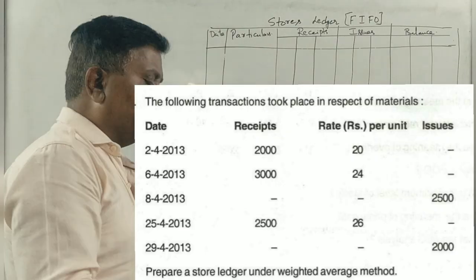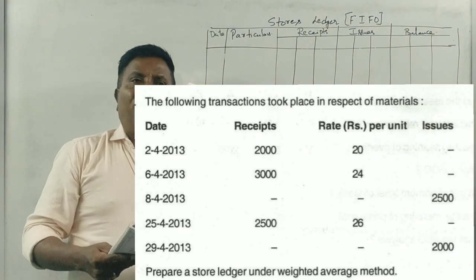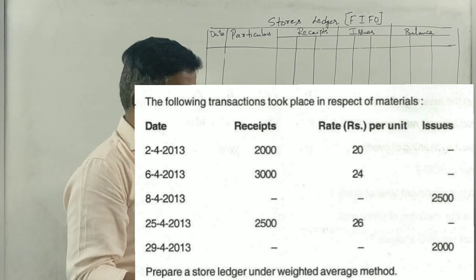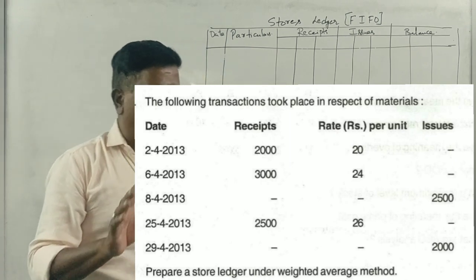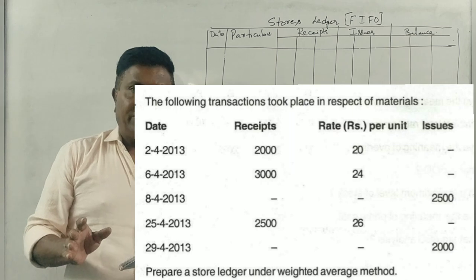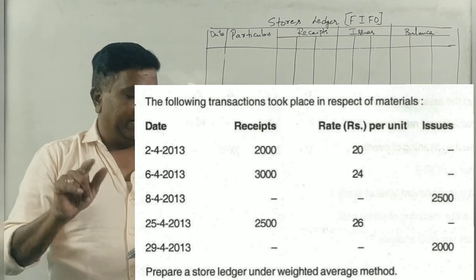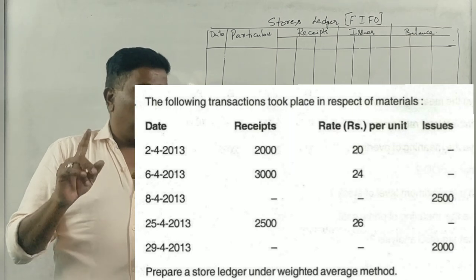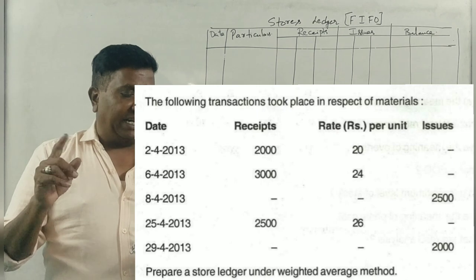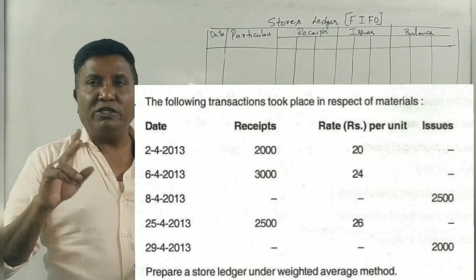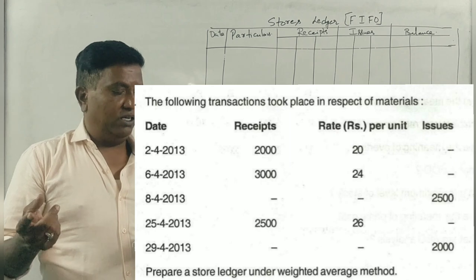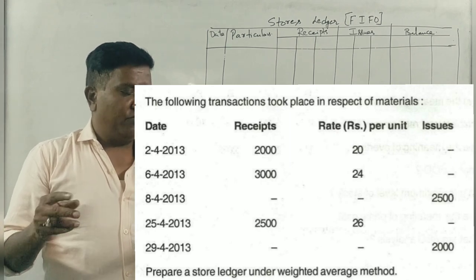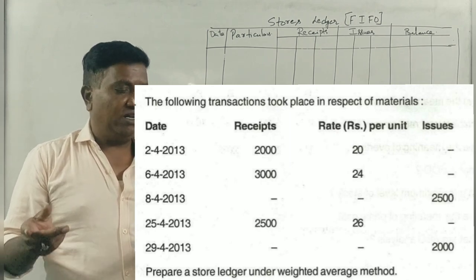Okay guys, 2014 I think one though, five months question. The following transactions took place in respect of materials, in respect of materials. Day 2, 2, 4, 2013, receipt 2,000 units, 20 rupees per dollar. 6th 4th, 8th 4th, 25th, 29th. But here, second purchases.